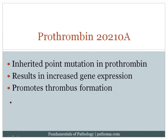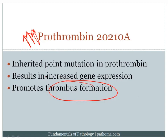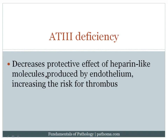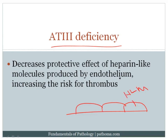Another example is the prothrombin G20210A mutation, in which a point mutation in the prothrombin gene results in excess production of prothrombin, which promotes thrombin activity and thus promotes thrombus formation, increasing the risk for a hypercoagulable state. Antithrombin III deficiency is a disorder in which patients lack antithrombin III. Normally the endothelium produces heparin-like molecules that bind and activate antithrombin III, which then inactivates thrombin and coagulation factors leading to thrombin production. A deficiency of antithrombin III increases the risk for thrombus formation.